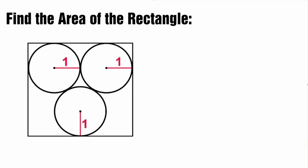First thing to remember is that the area is equal to x times y — the area of a rectangle — with x and y each being one side length of the rectangle. So we can call this side length x and this side length y. What we need to do is find x and y so we can multiply them together.